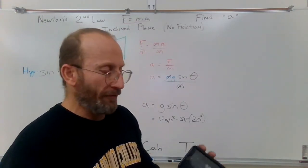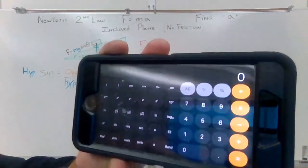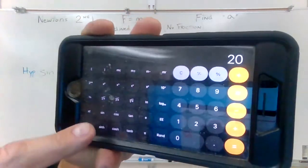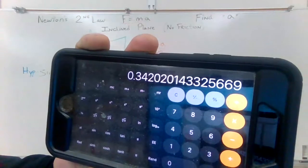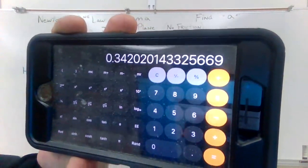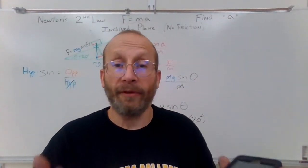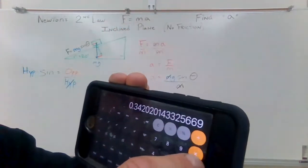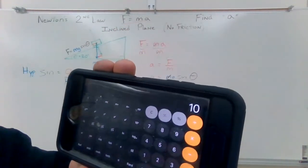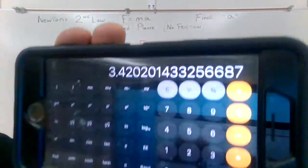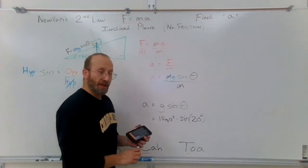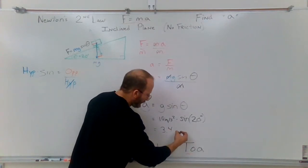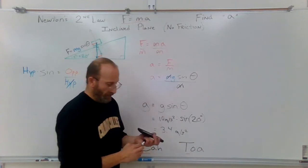I'm going to press sine, and calculate 10 meters per second squared times the sine of 20 degrees. I put in 20 degrees, hit the sine button, get a decimal — 0.34 something. For our math problems, round to the tenths place. Then I multiply that by 10 meters per second squared, and the result is 3.4. So the acceleration equals 3.4 meters per second squared.